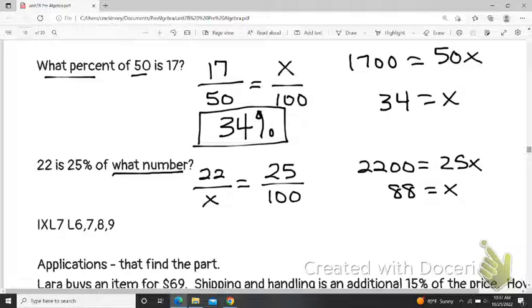Notice we already have something in the problem with a percent sign. So 88 is not a percent. 88 is just a number. So 22 is 25% of 88. 25%, that's like a quarter or a fourth. So that is the same as dividing by four. So 22 is one-fourth of 88. If I divide 88 by four, I do get 22. So it works.